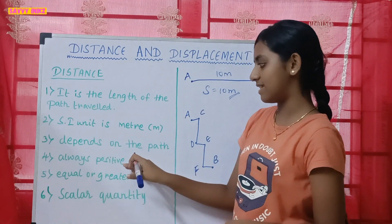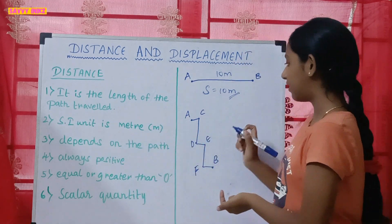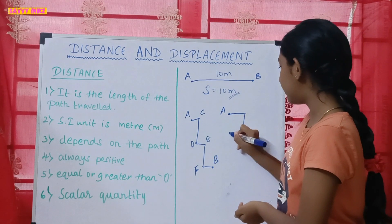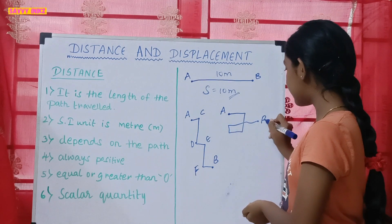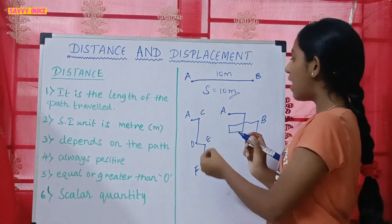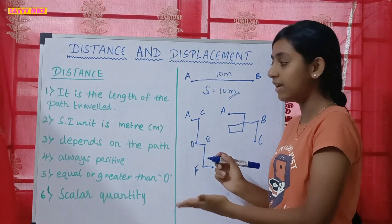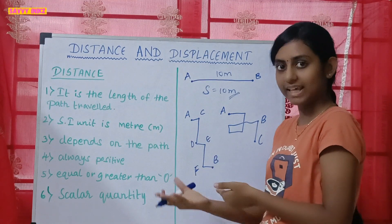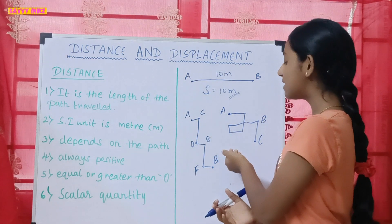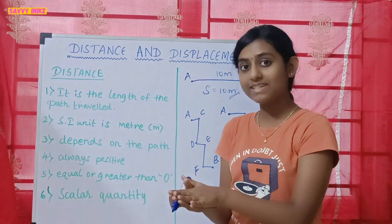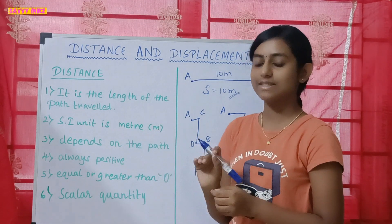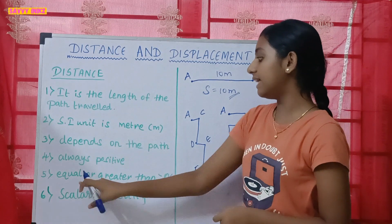Distance is always positive. We can verify this — when a body is moving, the distance keeps increasing as the path length increases and adds up more. Since it is always increasing, it will always be positive. It would only be negative if it were decreasing, but distance is always positive.